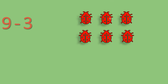1, 2, 3, 4, 5, 6. 6 insects are left. So we will write 6. 9 minus 3 equals to 6.